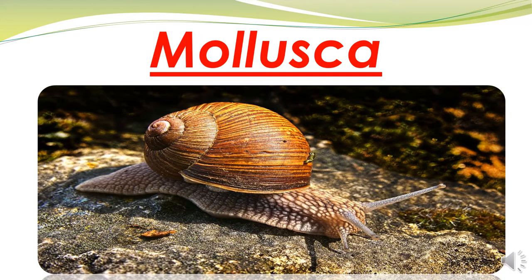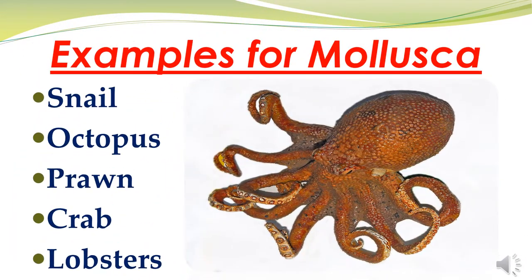Now we are going to talk about mollusca. Mollusca is our next subtopic. Examples for mollusca are snail, octopus, prawn, crab, and lobster. You can see a picture of an octopus in the left corner of the screen.